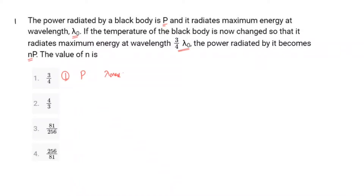The temperature in case one is T1. In the second case, the temperature is changed to T2 so that it radiates maximum energy at wavelength 3/4 lambda-naught, so lambda-max equals 3/4 lambda-naught. The power radiated becomes nP. We need to find the value of n by combining Stefan's Law and Wien's Law.